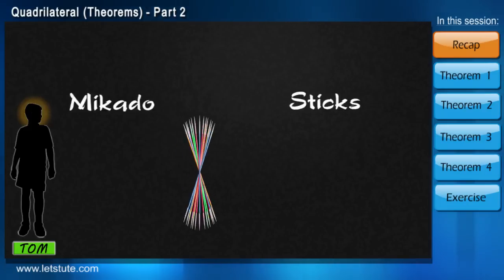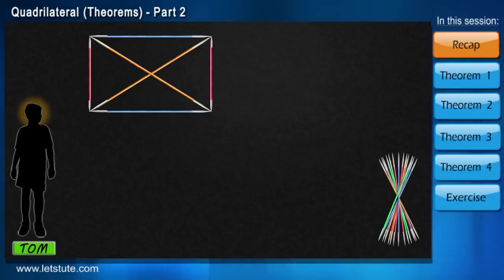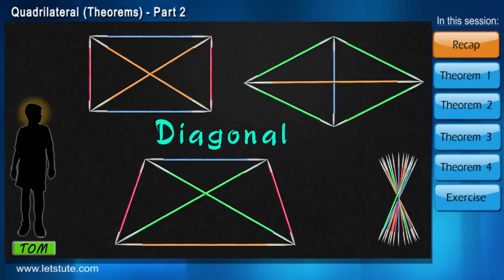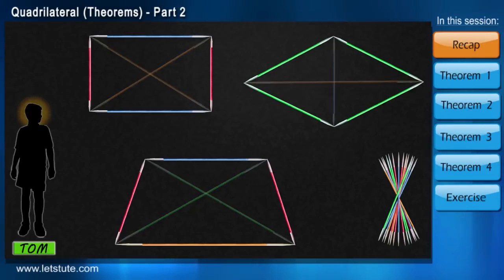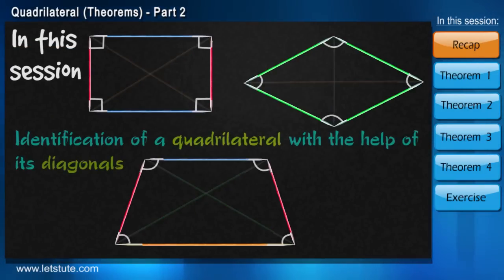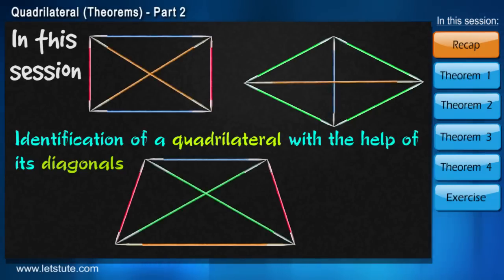One day while he was playing with Mikado sticks, he tried forming several combinations of quadrilaterals. And something that caught his attention was that the diagonals were affecting the shape of the quadrilaterals. Friends, all this while we identified the quadrilaterals by their sides and angles. But in today's session, we'll learn how to identify them by their diagonals.